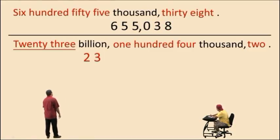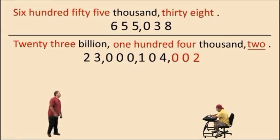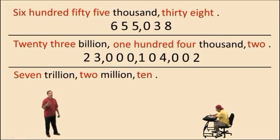Here we have twenty-three billion. Notice we do not have any millions. We put the three zeros to represent that period. Remember, you have to represent all the periods when you're writing the numbers using digits. We have one hundred four thousand two. Remember you have to have three digits in each period except for the first one.